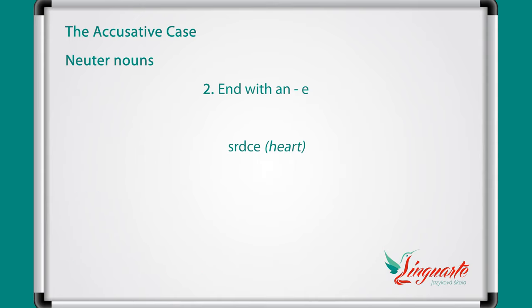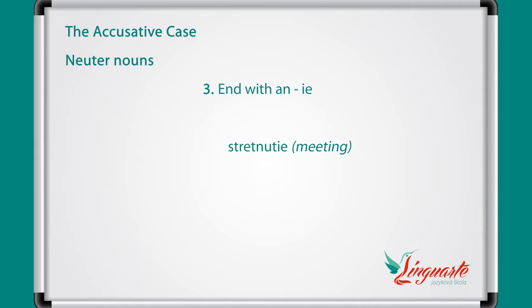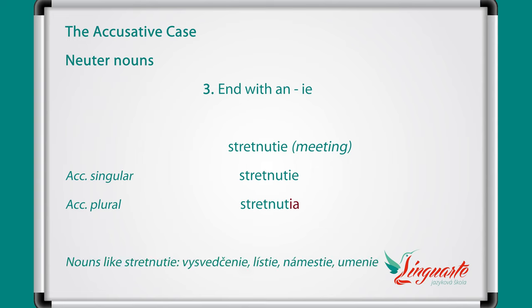The nouns ending in e like srdce form the accusative with srdce in singular and srdcia in plural. Nouns like srdce are vajce, more, nástupište, pole. The nouns ending in ie like stretnutie have stretnutie in the accusative singular and stretnutia in the plural form. Other nouns of this type are vysvedčenie, lístie, námestie, umenie.